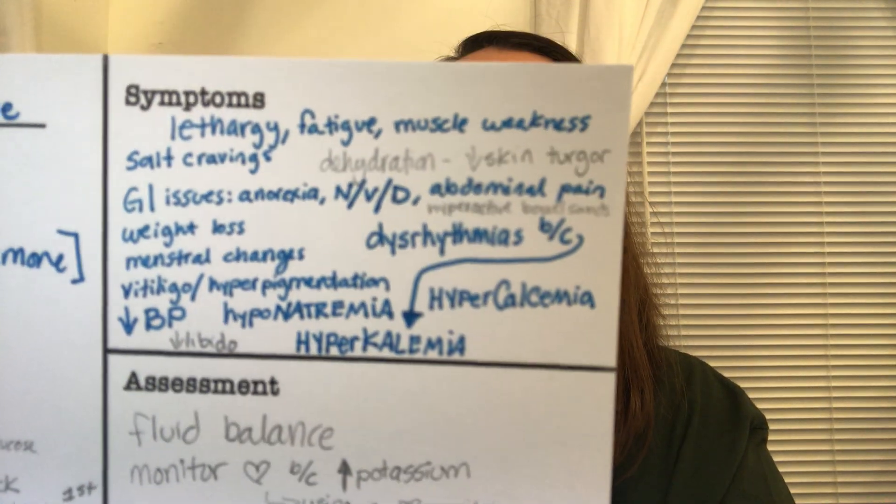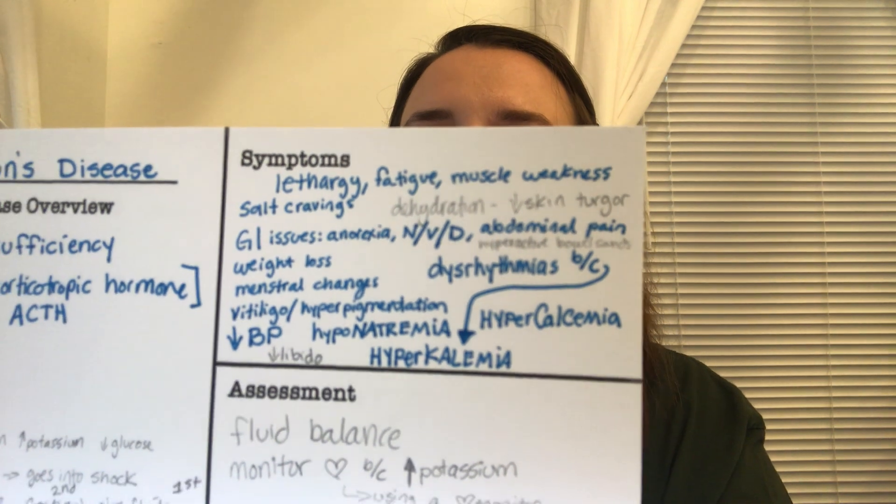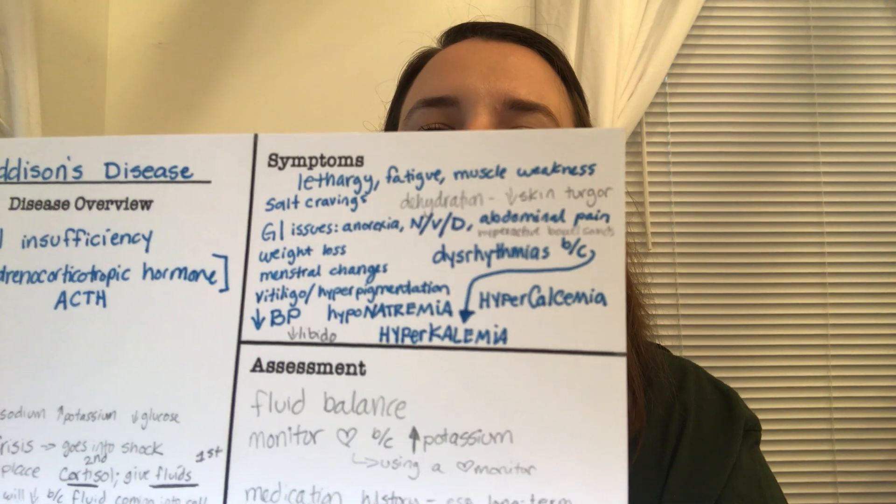A memory trick: there was a character on Grey's Anatomy named Addison, who was a salty, bitter character. Addison's disease patients have salt cravings. The character was skinny — weight loss — and could have decreased libido, which would fit the symptoms. She was weak and thin — muscle weakness and fatigue. So associate the disease with a salty character that has weight loss, decreased libido, and muscle weakness.